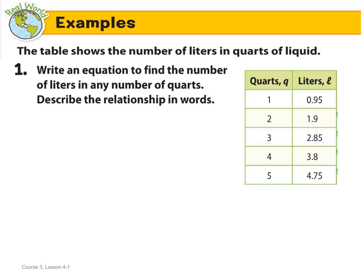Real world examples. The table shows the number of liters in quarts of liquid. Number one: Write an equation to find the number of liters in any number of quarts. So we're trying to find the number of liters in any number of quarts. We're going to take a number, multiply it by the quarts to get our liters. So we're going to look at our table and look for our rate of change. What is the rate of change between each quart? You can see that the quarts are going up by one.